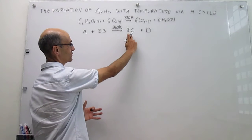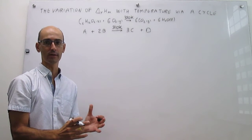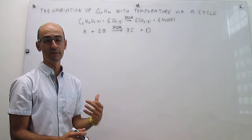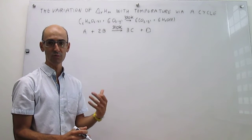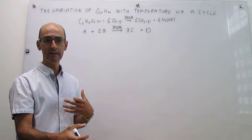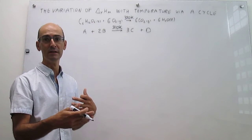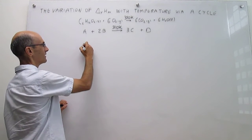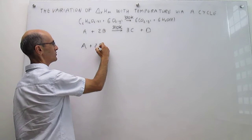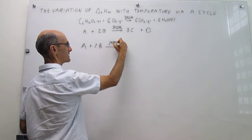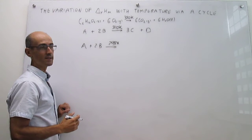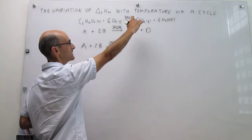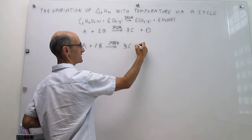The idea is that you don't know how to go directly from reagents to products. But notice that because enthalpy is a state function, if you devise an alternative route that connects reagents and products, maybe through more steps, the enthalpy of the overall process will just be the sum of the enthalpies of the intermediate steps in the cycle. We can envision that cycle as simply involving the reaction at 298 Kelvin, because we know how to calculate this — you can always use data in tables.